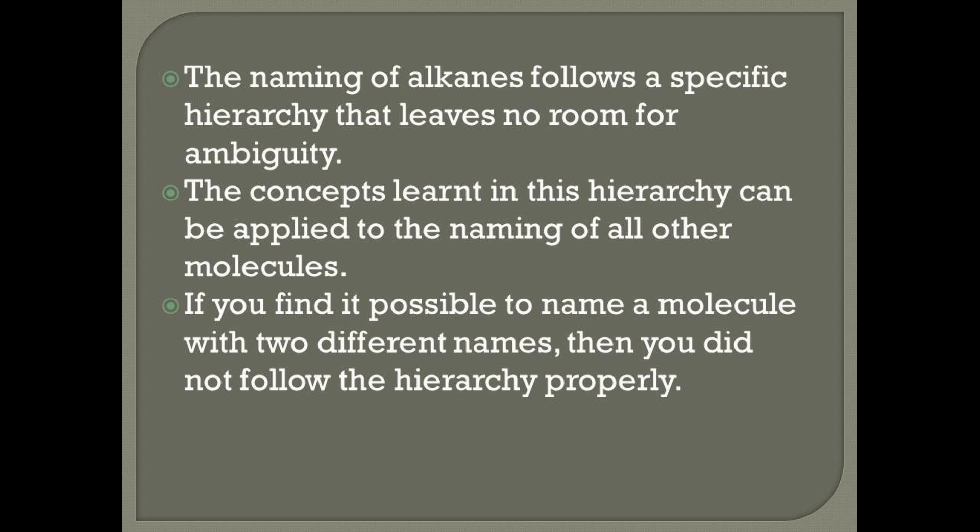If you find it possible to name a molecule with two different names, then you did not follow the hierarchy properly. IUPAC rules are made in a way so that every molecule gets one name — there's going to be no room for ambiguity. Please follow the rules properly and you should always end up with a single name for every molecule you encounter. This tutorial is split into rules, and there's an accompanying worksheet that you should solve as you go along. After you finish every rule, refer to the worksheet and try to solve some of the questions for that rule so that you learn hands-on.